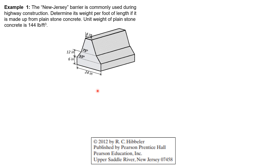In order to compute the unit weight in pounds per foot, we have to compute the cross-sectional area because it is uniform across the entire length. So we consider a one-foot strip. The area is important: once we get the area, we multiply it by the unit weight of plain concrete, and it will give us units of pounds per foot.